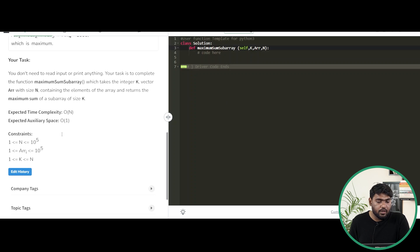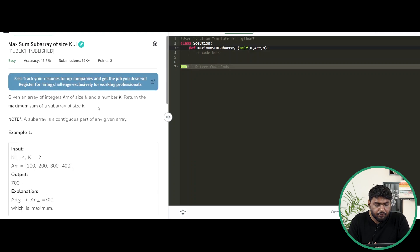The expected time complexity is O(n) and space is O(1). Let's see the test cases and try to understand the problem in a better way.